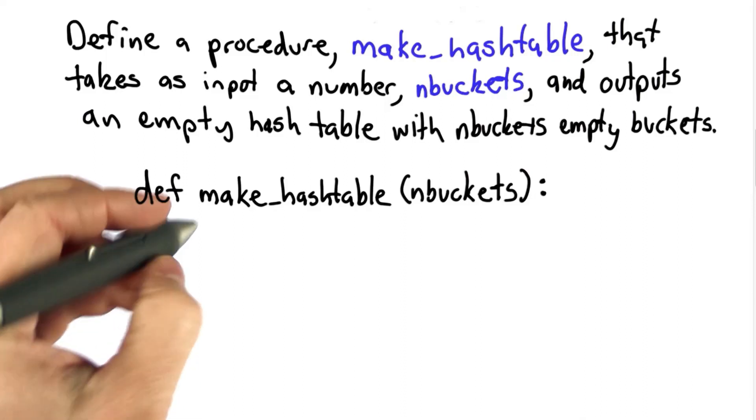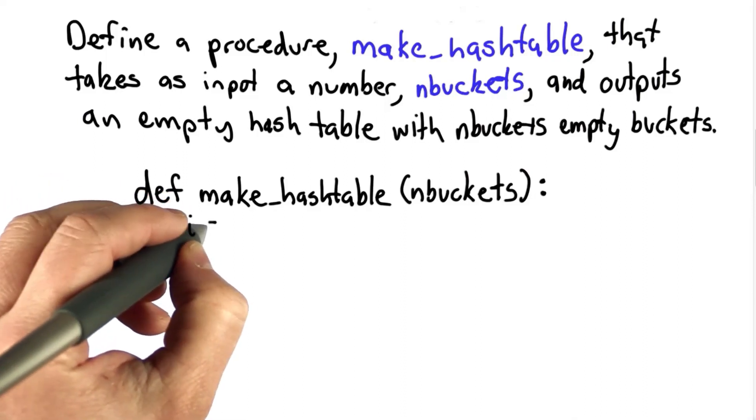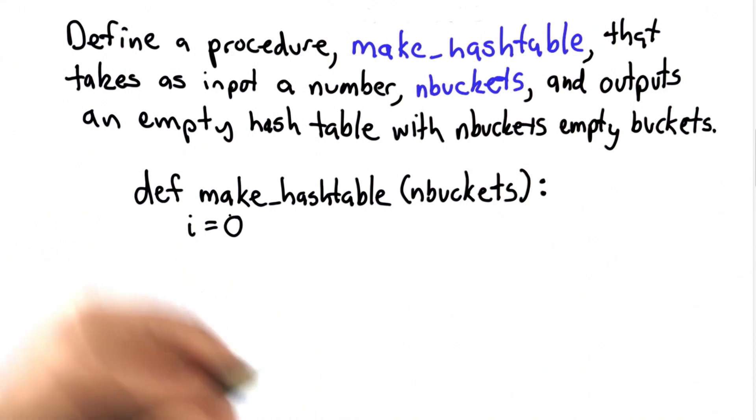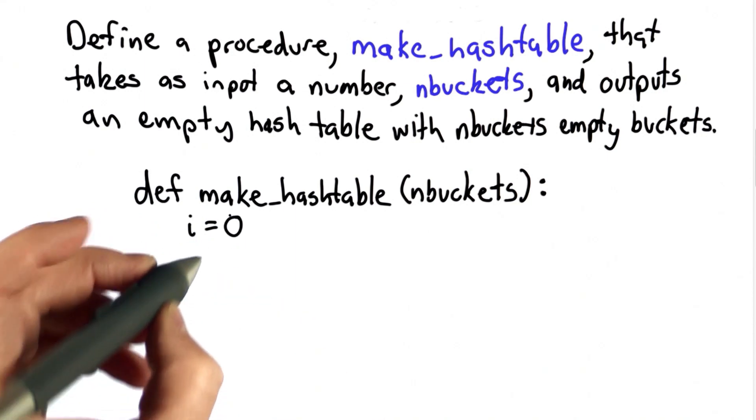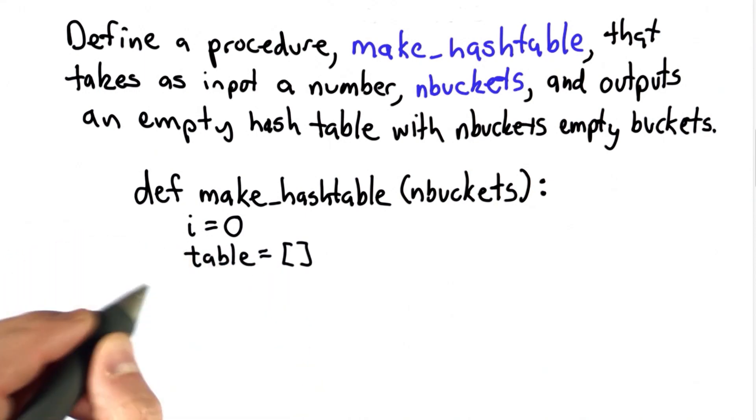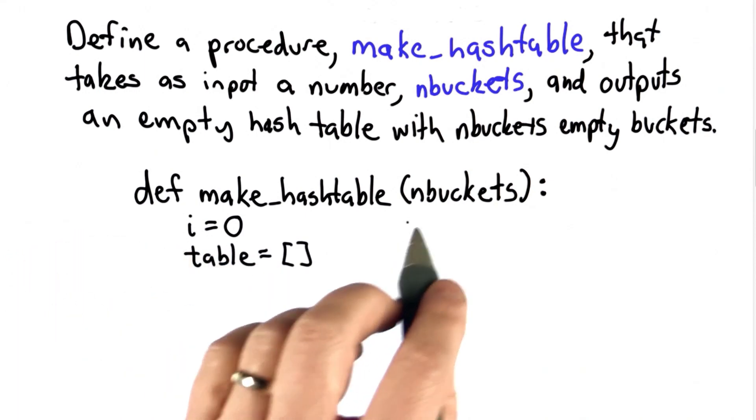Here's one way to define make_hashtable. We're going to start by initializing a variable i to 0. We need to keep a count of the number of buckets. So we're going to start by creating an empty table. And what we want to do is add n buckets, number of buckets to the table.